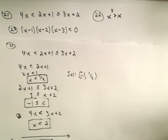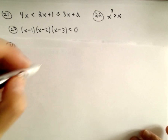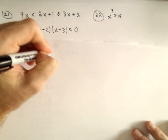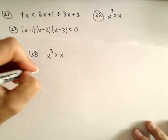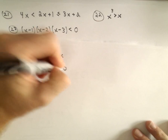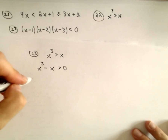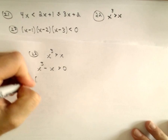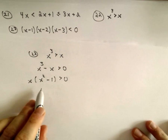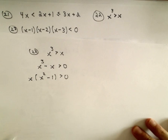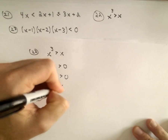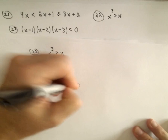Number 22: we've got x cubed greater than x. For inequalities, you just make one side equal to 0, so I'm going to start off by subtracting x from both sides. Try to factor — notice I can factor out an x, and I would have x squared minus 1 left over. I can then factor x squared minus 1, that's the difference of perfect squares, so I'll have x times (x minus 1) times (x plus 1) greater than 0.